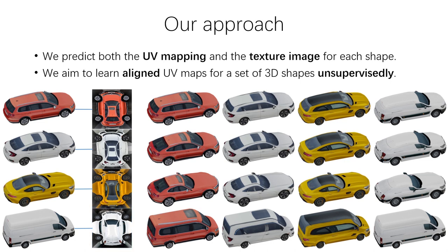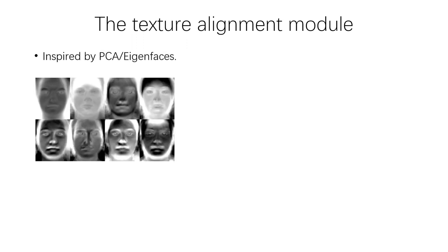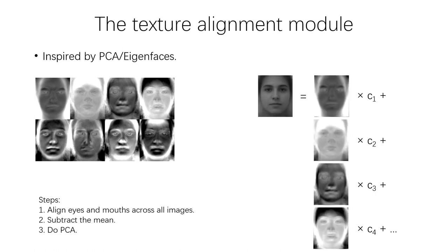So how do we achieve the alignment in an unsupervised way? We came up with a simple yet effective alignment module, inspired by eigenfaces. Recall that there are three steps for computing the eigenfaces. First, we need to align the face images. Then we subtract the mean and do PCA. Afterwards, face images can be reconstructed by linear combinations of eigenfaces. Note that the images must be aligned first, otherwise the reconstruction quality will drop. So, could we exploit that point? If we design a neural network to explain any input image with a linear combination of basis images, the network should learn to align the input images into a canonical pose to minimize the reconstruction error.